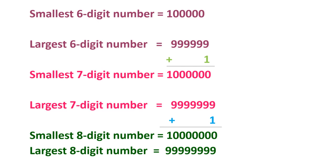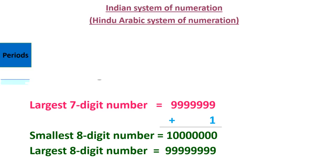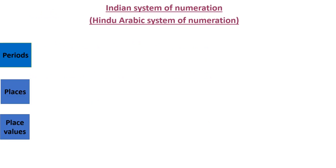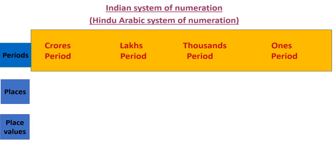The Indian system of numeration is also called the Hindu-Arabic system of numeration. I'll be telling you the three rows: first one is periods. As we are studying here till eight or nine digit numbers, the periods will be till crore period. The Indian system of numeration is divided into periods.